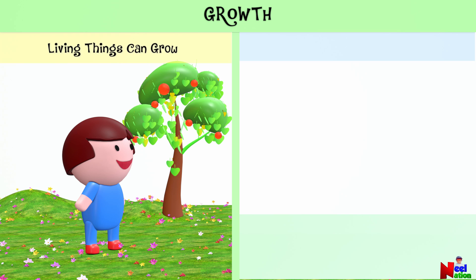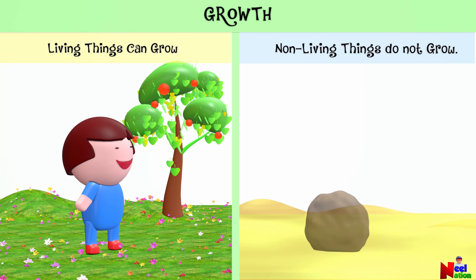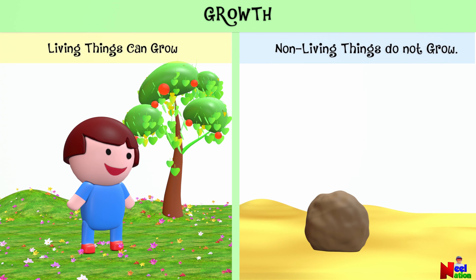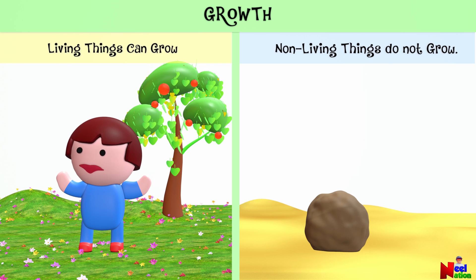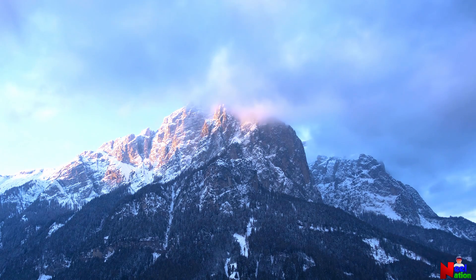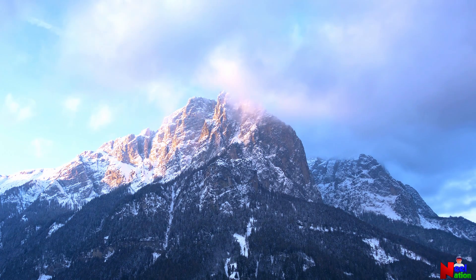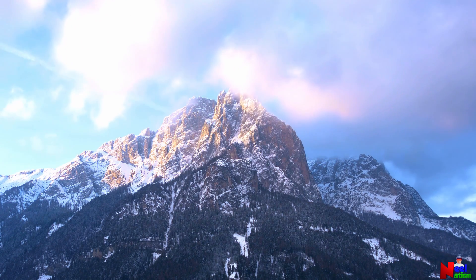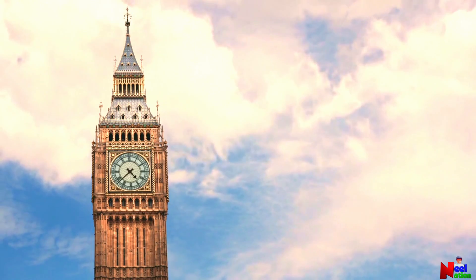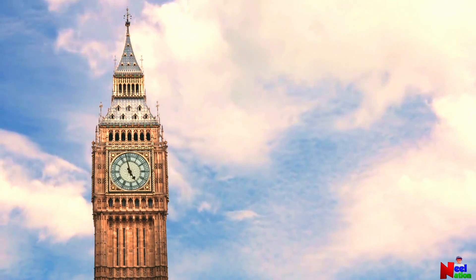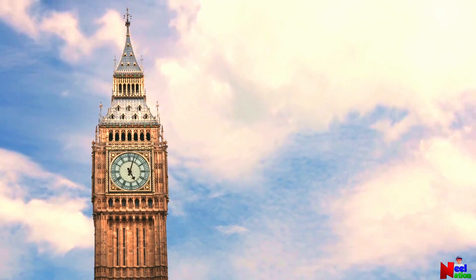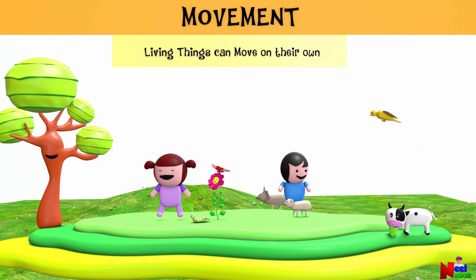Non-living things do not grow or develop. Look at this rock — it will not grow or develop, and it will stay the same size and shape. Unlike living organisms, non-living things like rocks or buildings stay the same and don't change by themselves. As the years go by, they keep their shape and look the way they always did.